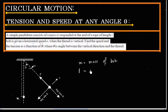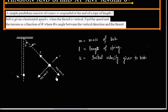Length of the string is L. Initially the bob is given a horizontal velocity u, so it will follow a circular path.